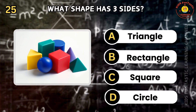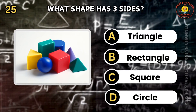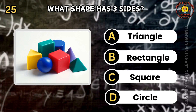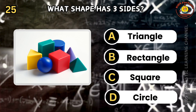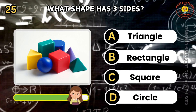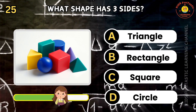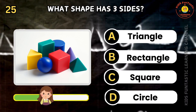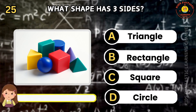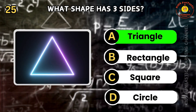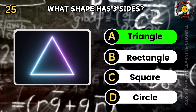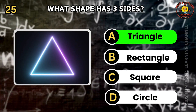Question 25. What shape has three sides? A: triangle, B: rectangle, C: square, D: circle. Excellent work! The correct answer is A. A triangle has three sides.